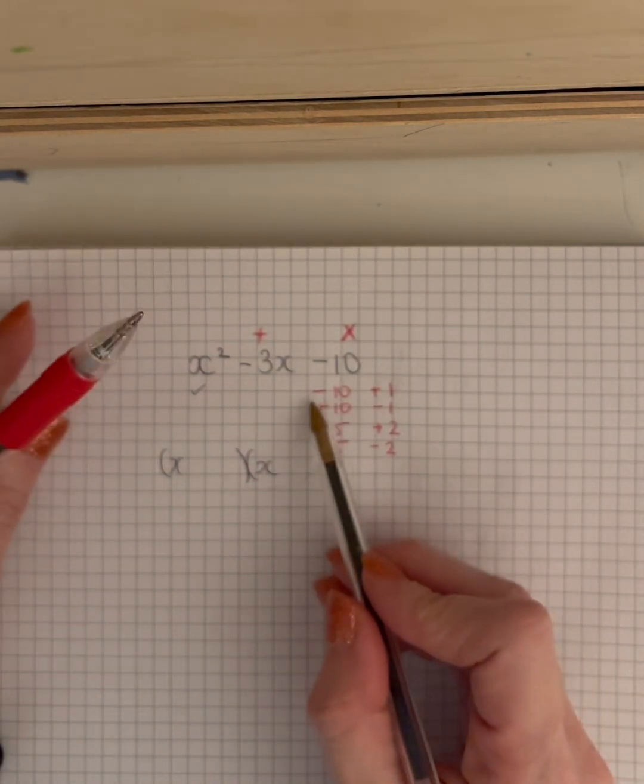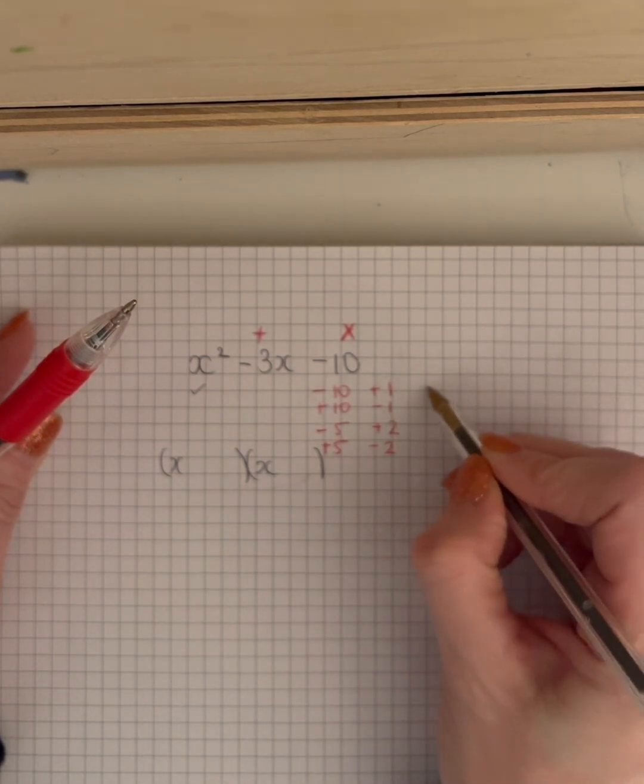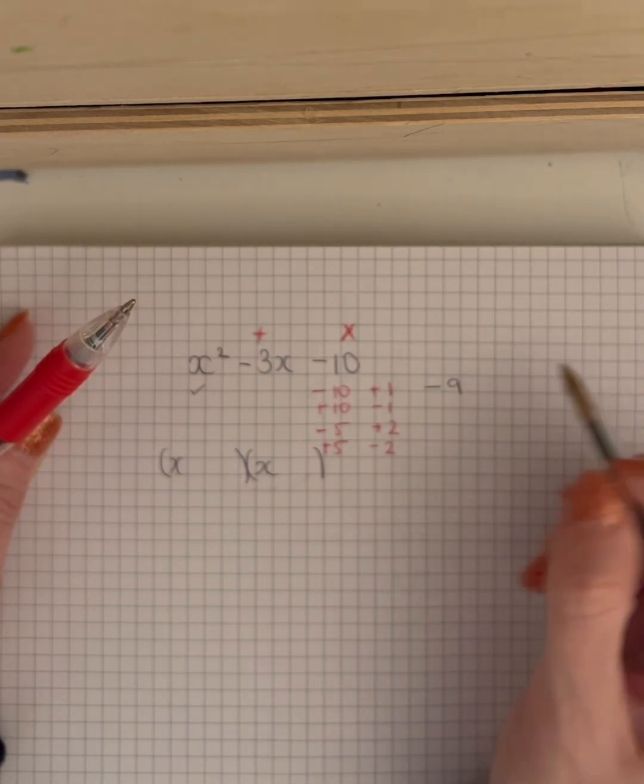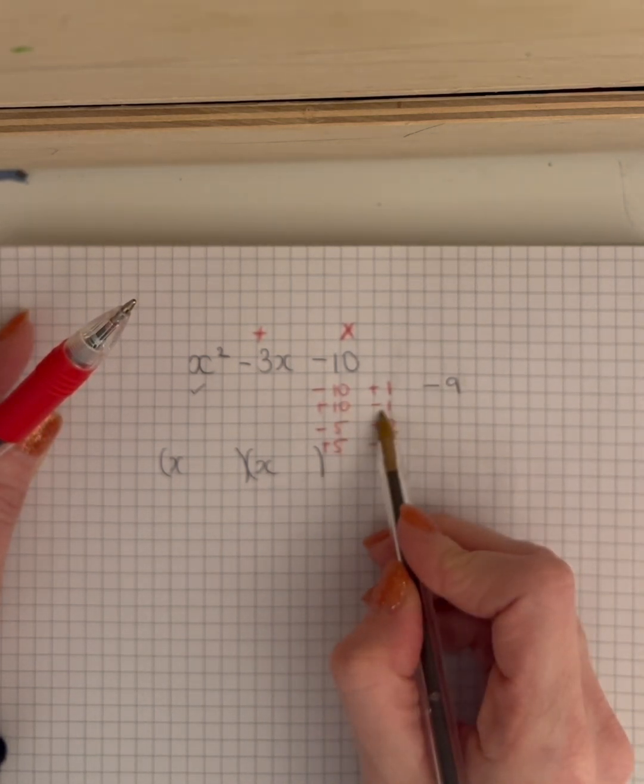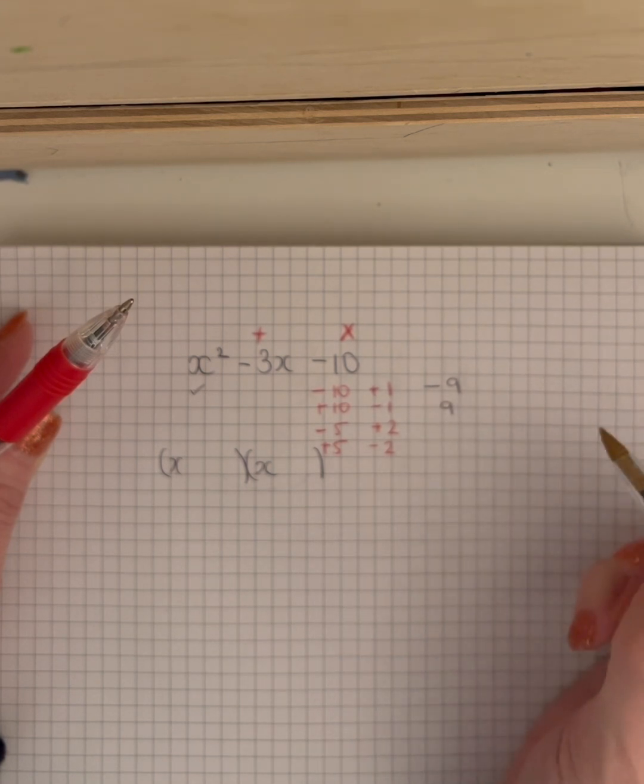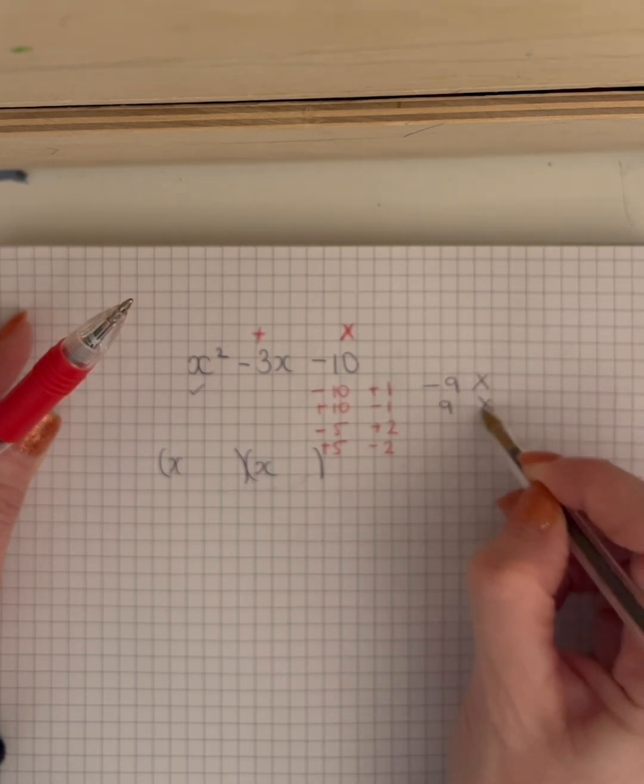So let's see, minus 10 plus 1 is minus 9, that doesn't work. Plus 10 minus 1 is 9, that also doesn't work, definitely doesn't give me 3. Let's do this, minus 5 plus 2, that gives me minus 3.